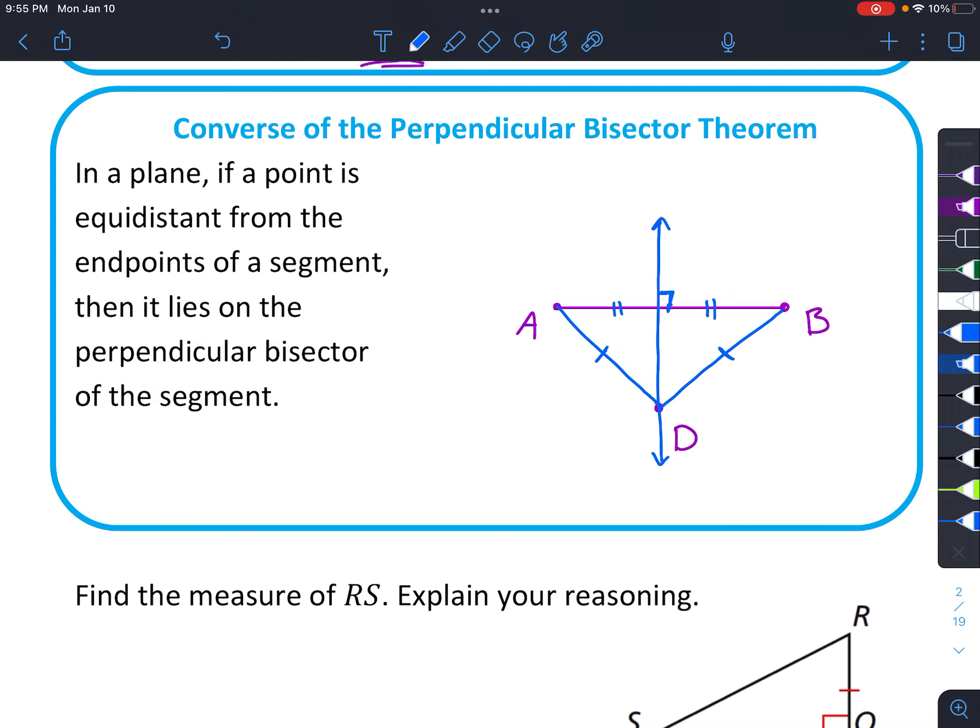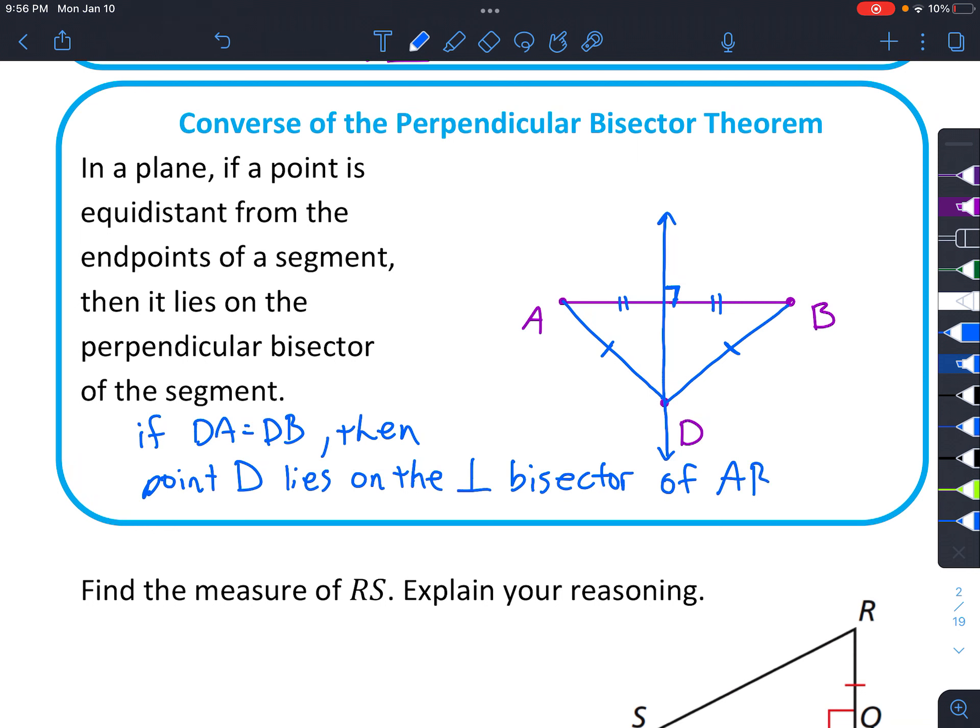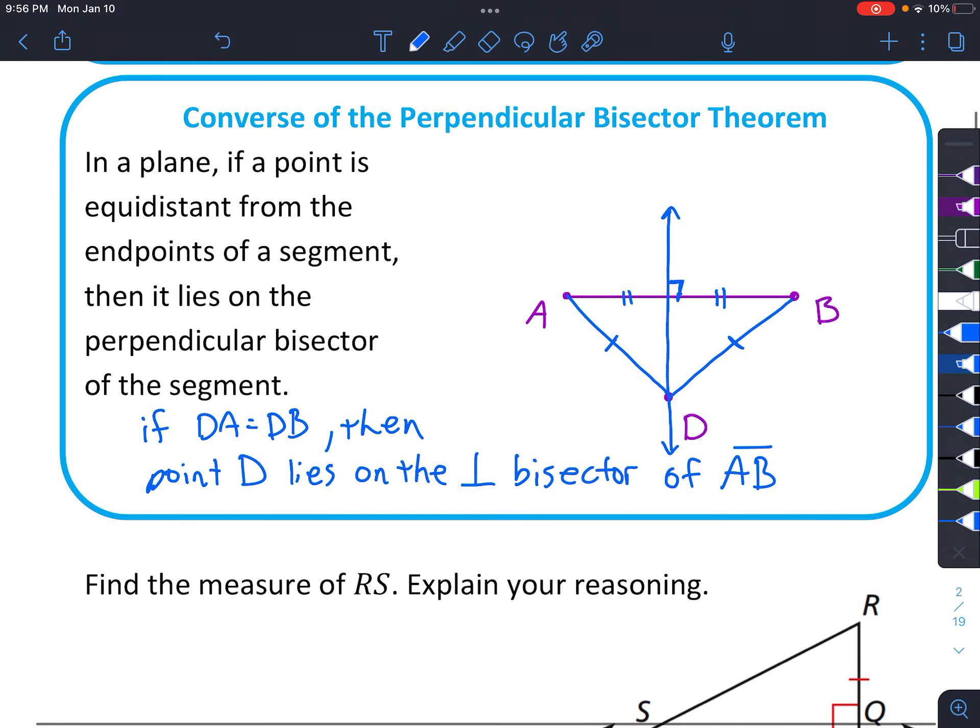Okay, so the way we'd conclude this is we'd say if DA equals DB, then point D lies on the perpendicular bisector of line segment AB.